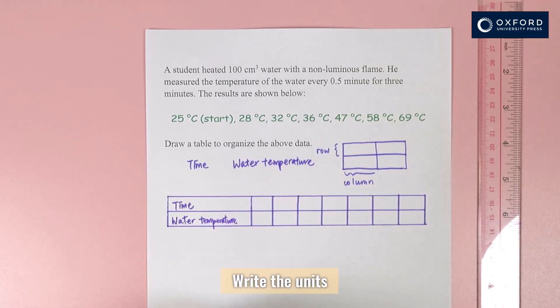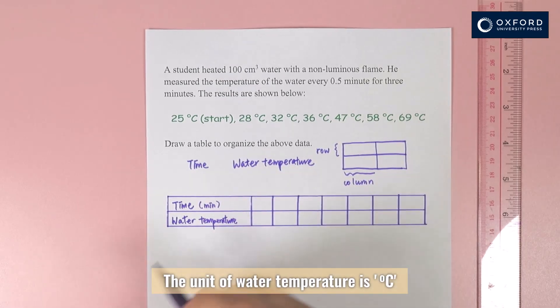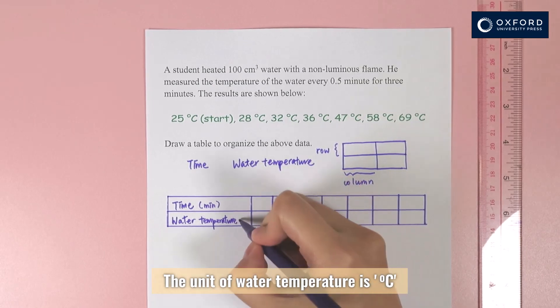Write the units. The unit of time is minute. The unit of water temperature is degree Celsius.